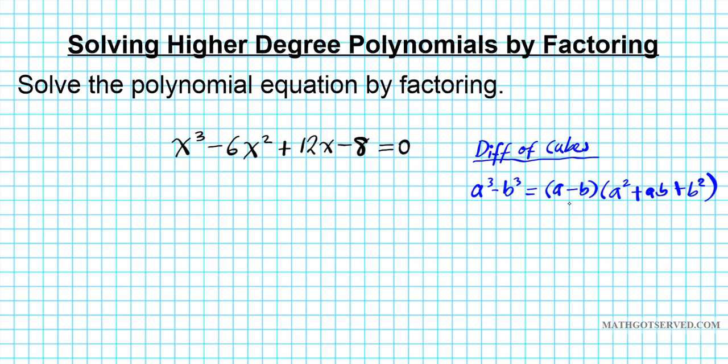The first sign in the factored state is always the same as the sign of the sum or difference of cubes. The second sign is always the opposite and the last is always positive. Let me show you the positive version too. So a³ + b³ is equal to, first sign is going to be the same, (a + b), second sign a² is going to be the opposite of the sign here which is negative, minus ab, and the last sign is always positive.